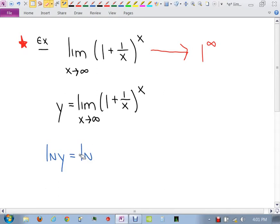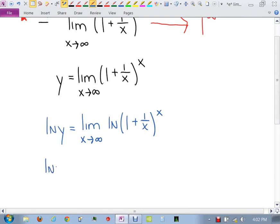The natural log will pass through the limit, meaning that the natural log can go through the limit. Algebraically, it's fine to do that. So I've taken the natural log on both sides, and that allows me to do what now? Take that x and drop it in front of the natural log. Fabulous.